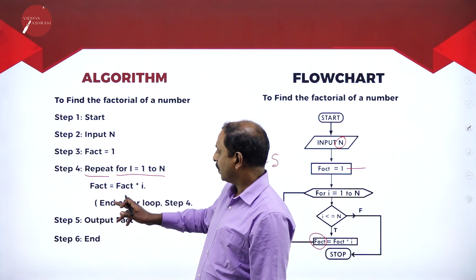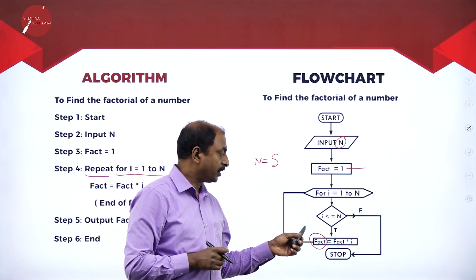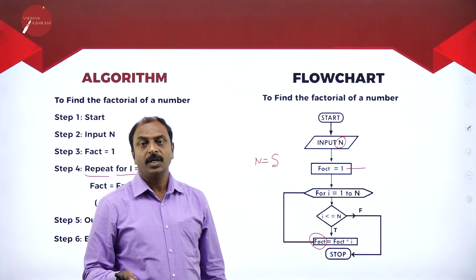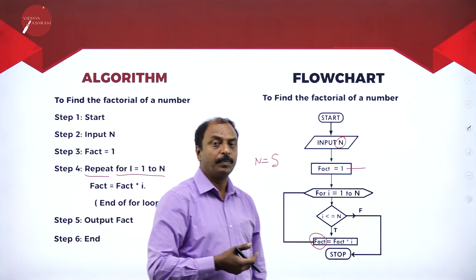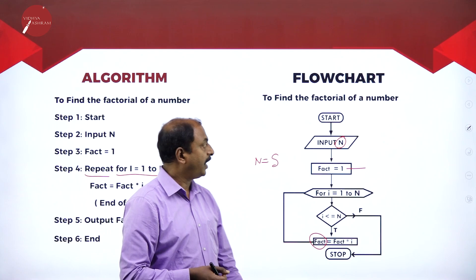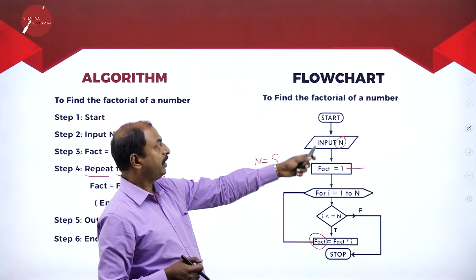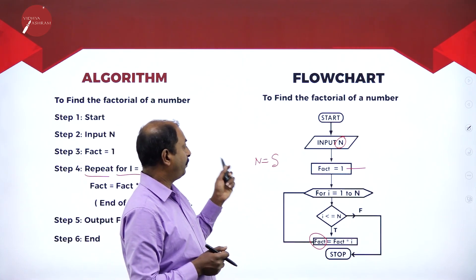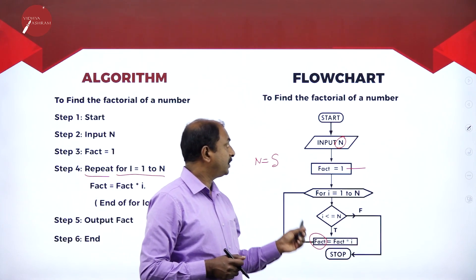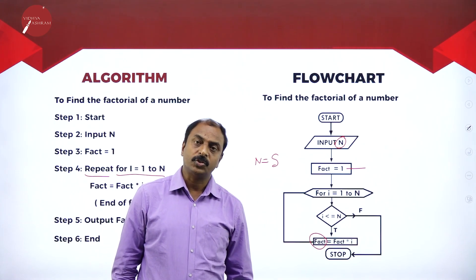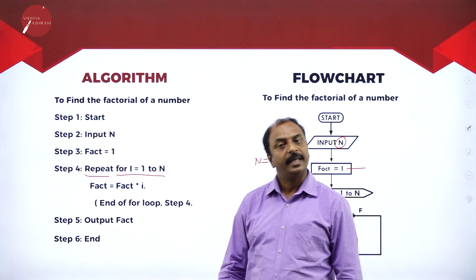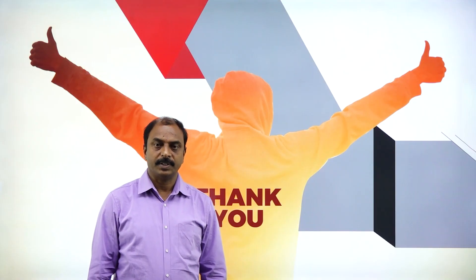So a flowchart is a diagrammatic representation used to represent the solution to a problem, using different geometrical shapes — oval, parallelogram, rhombus, and others as we have seen. This is nothing but a flowchart. Students, let us continue our discussion in our next session. Thank you very much.